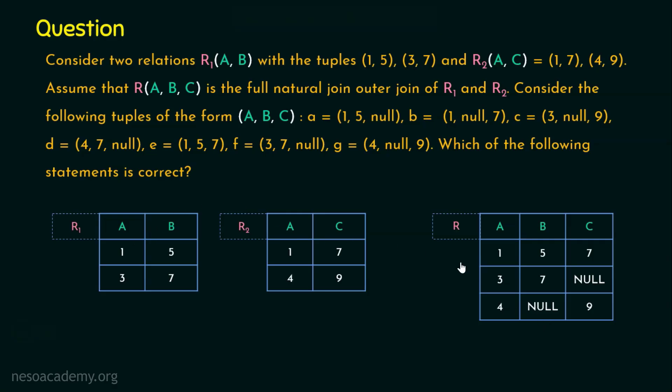In simple terms, full outer join will give the output from both relations, to be precise, both matching and non-matching tuples or rows. Now if you freely observe, this is the actual output of the full natural outer join. Remember, full natural outer join means it has two important pieces of information: it is actually a full outer join where we get both matching and unmatching rows from both relations R1 and R2.